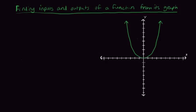Now I want to talk about finding inputs and outputs of a function from its graph. We're trying to figure out what are all the possible inputs — the domain — and what are all the possible outputs — the range — given the graph. So if we just know what it looks like, how can we figure out what the inputs and outputs are?